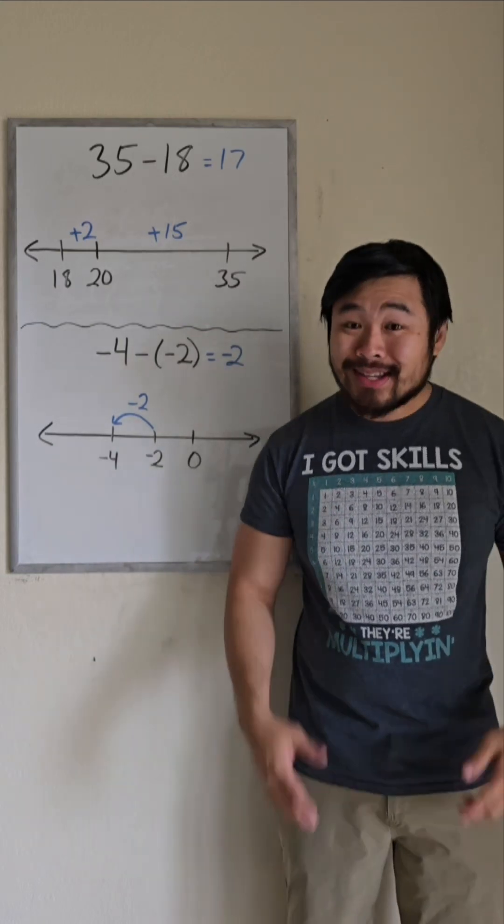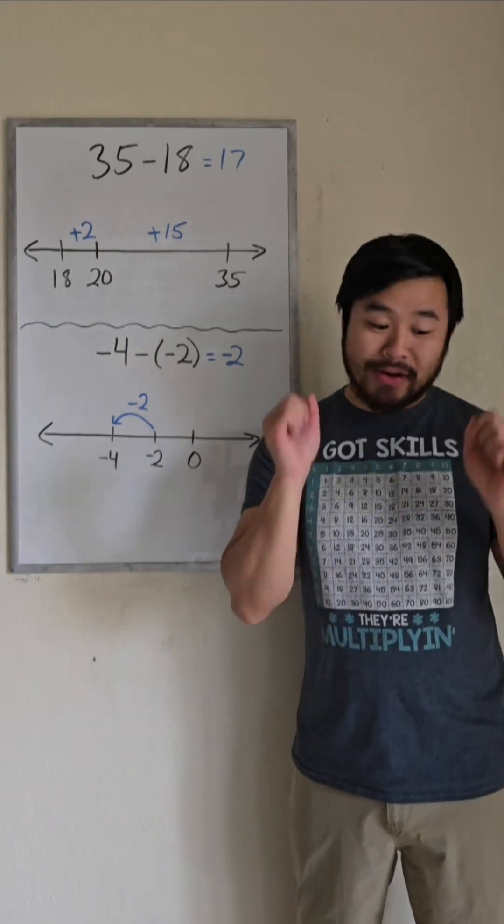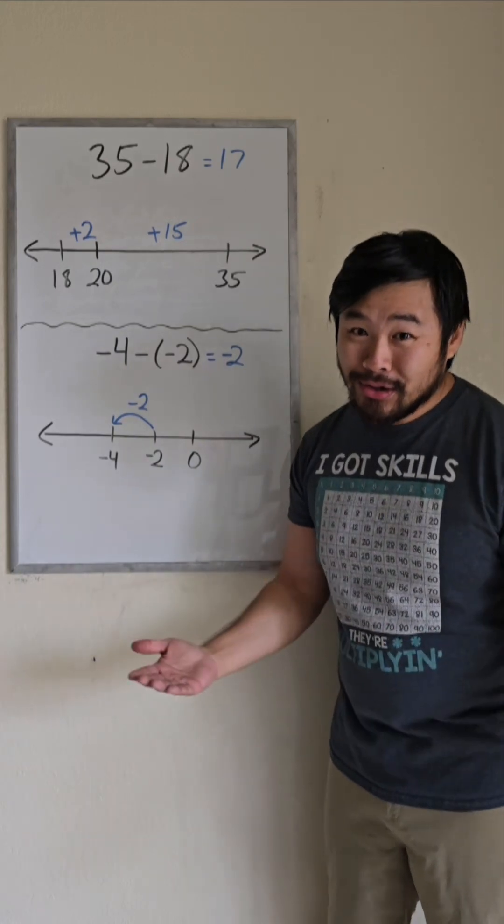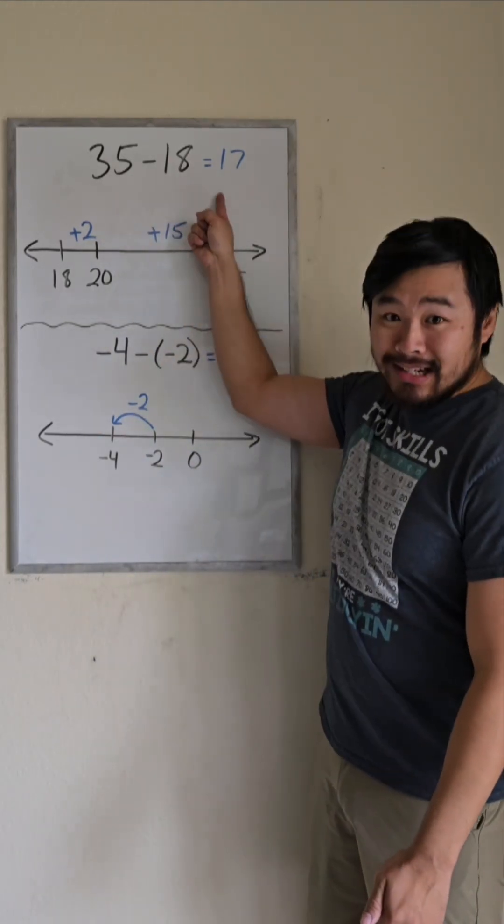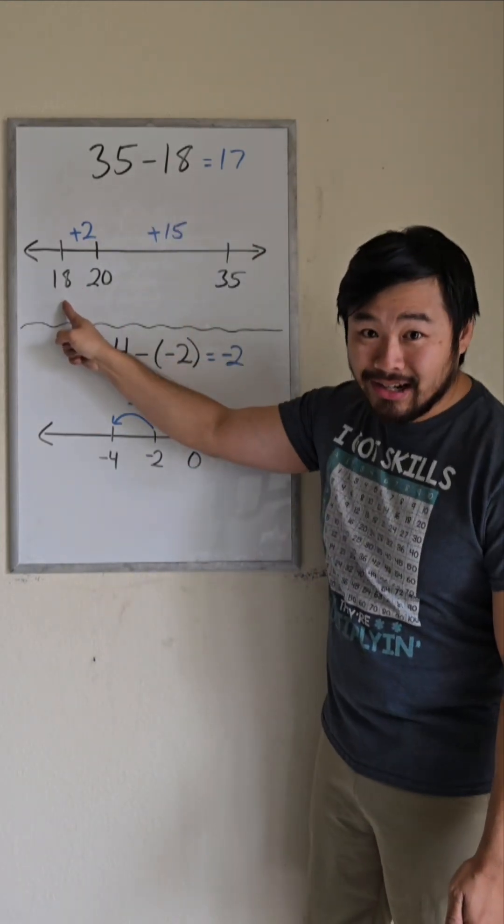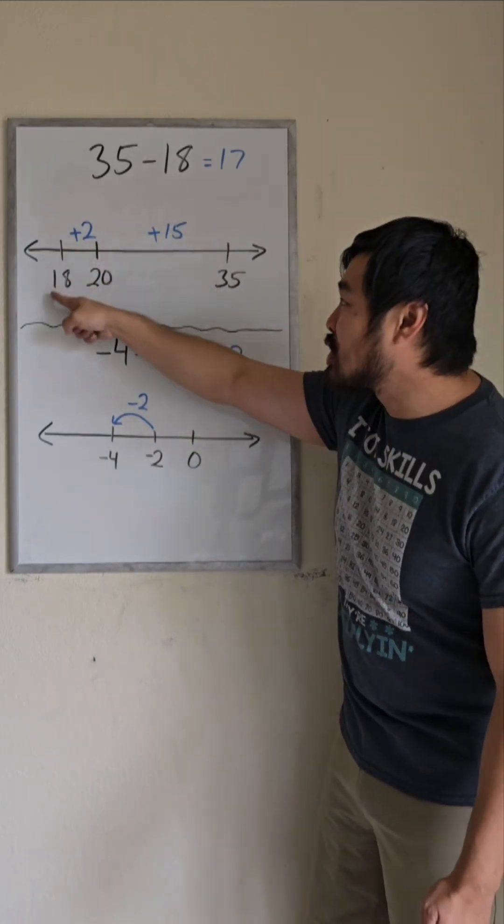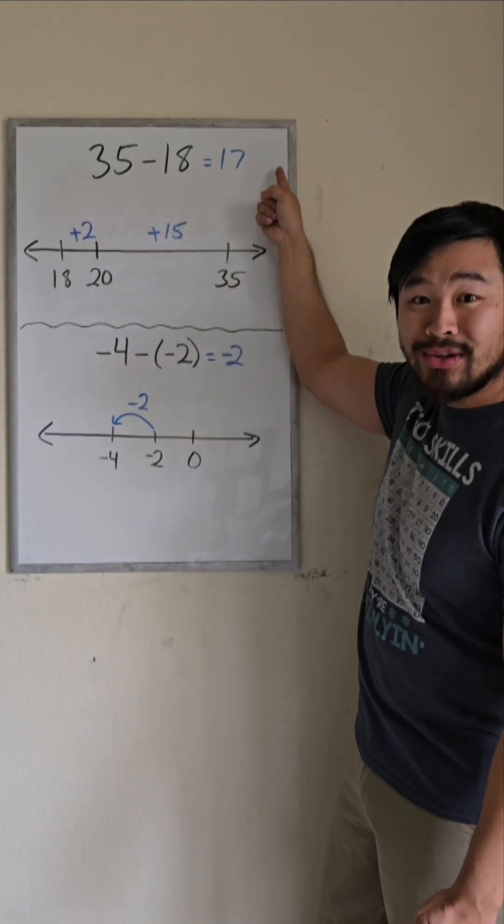Now another way we could do this is we could think of subtraction as if I start at one number, how can I get to the other number? And students in younger grades have seen 35 minus 18 as if I start at 18 on the number line, how can I get to 35?